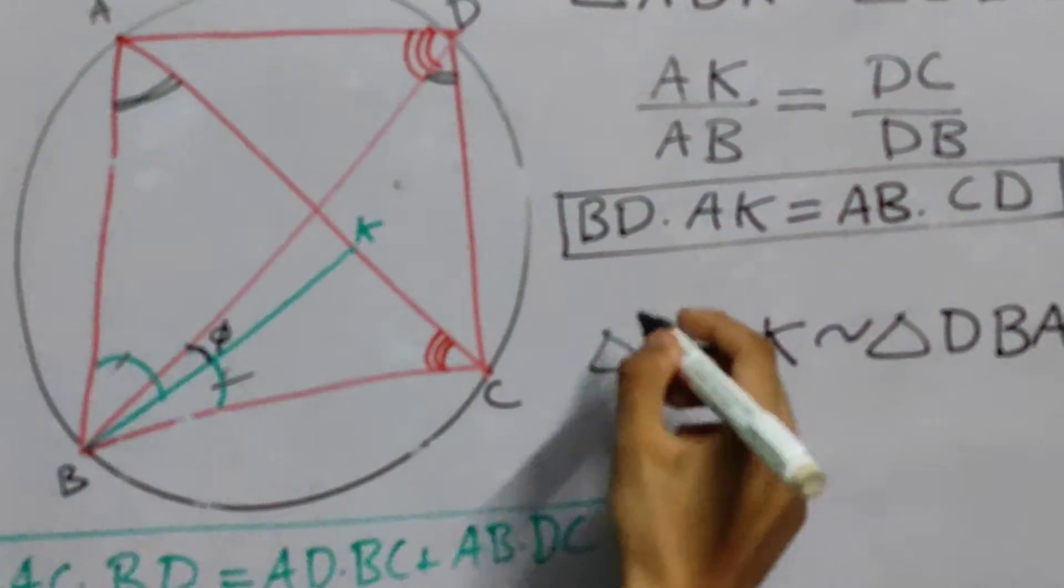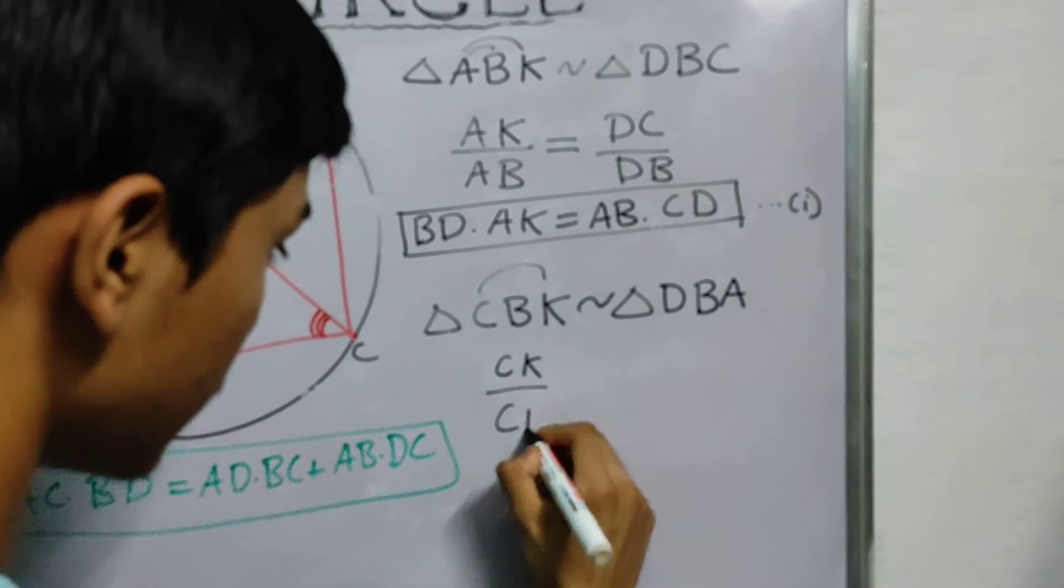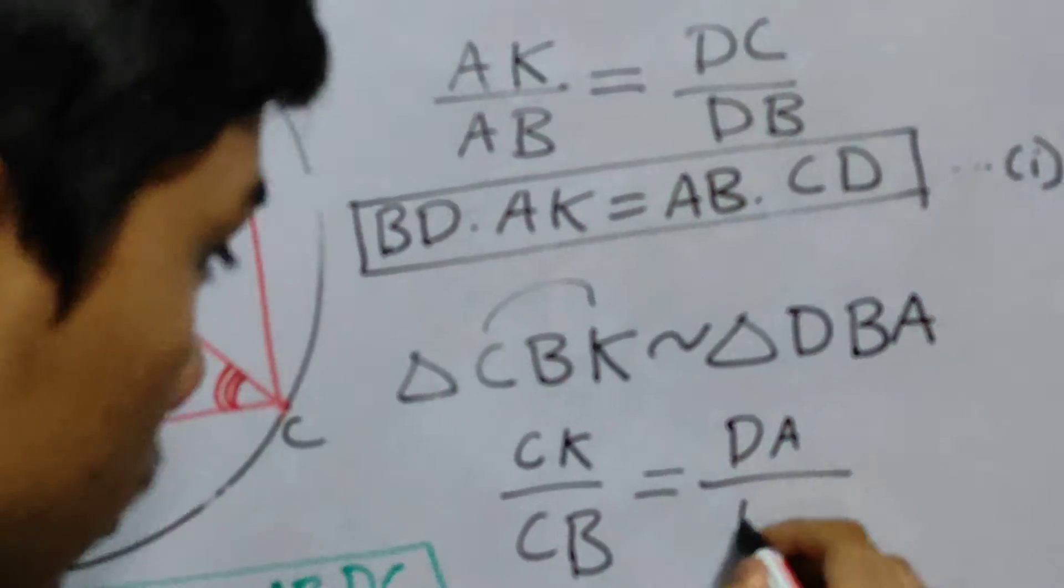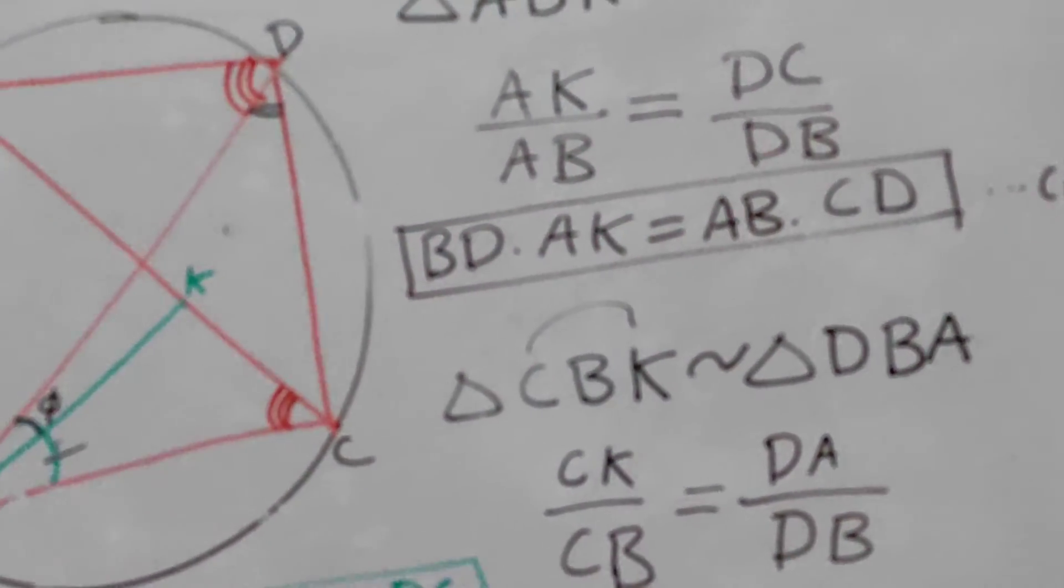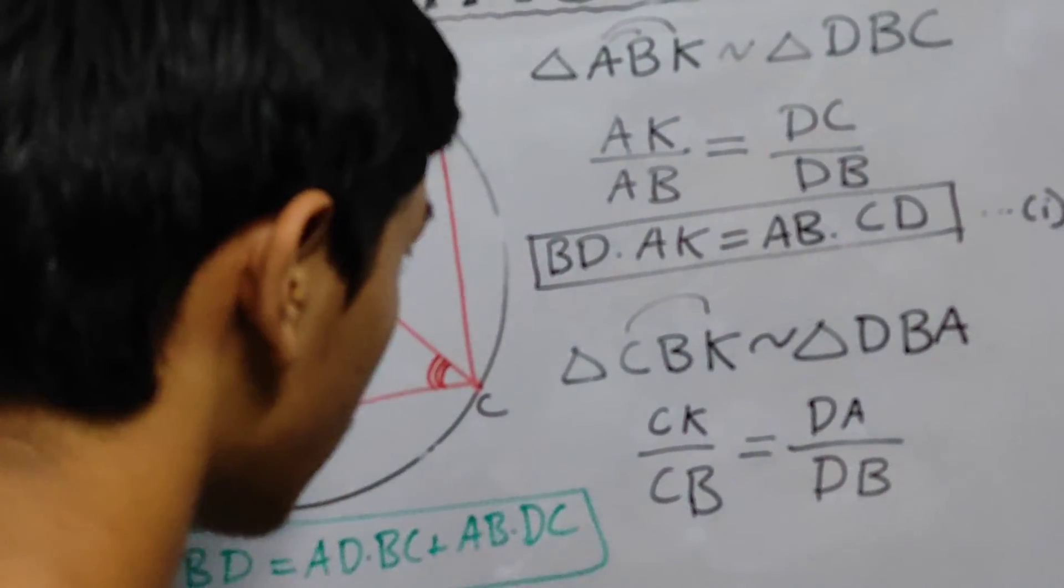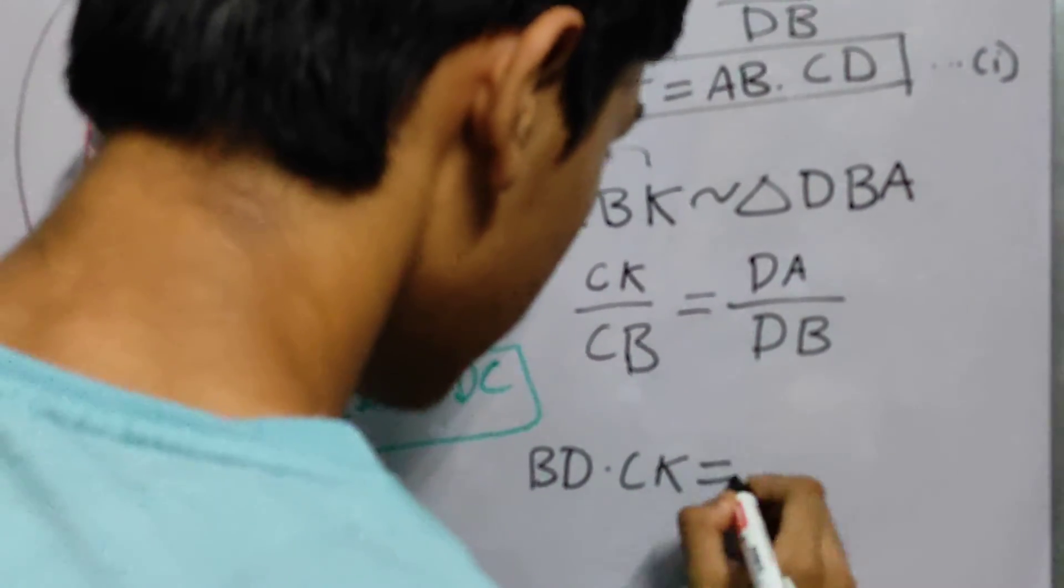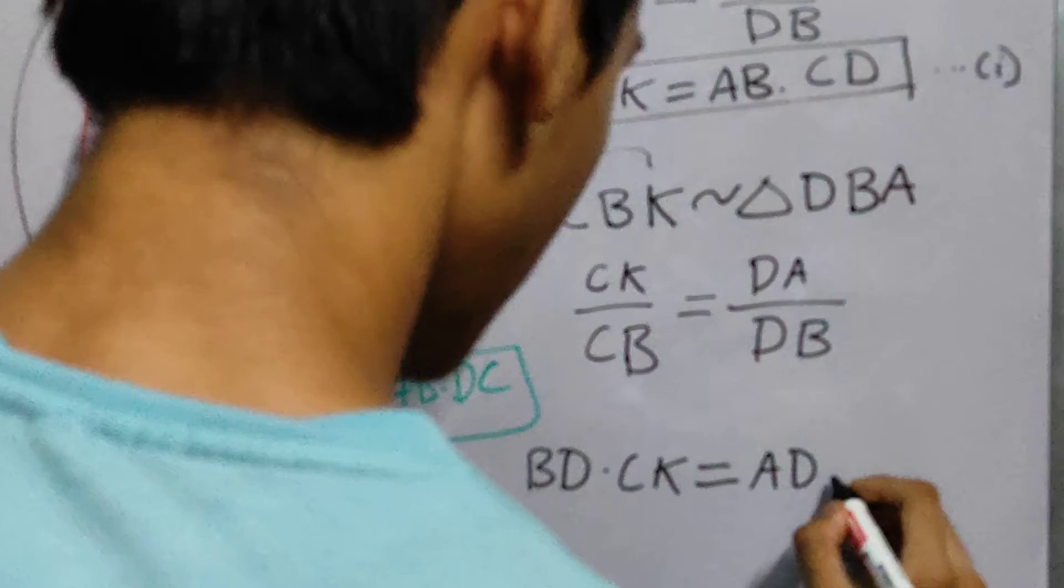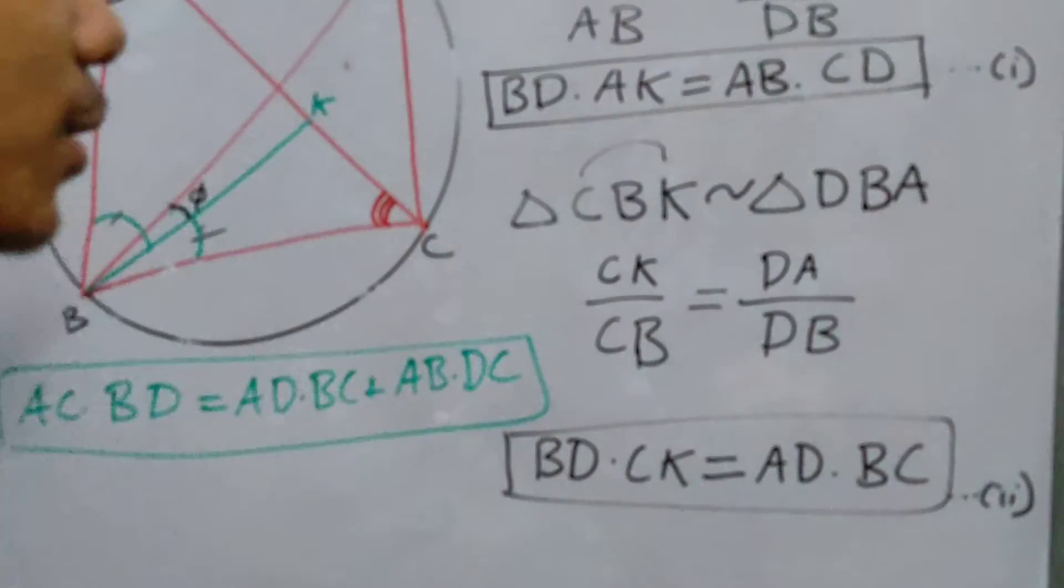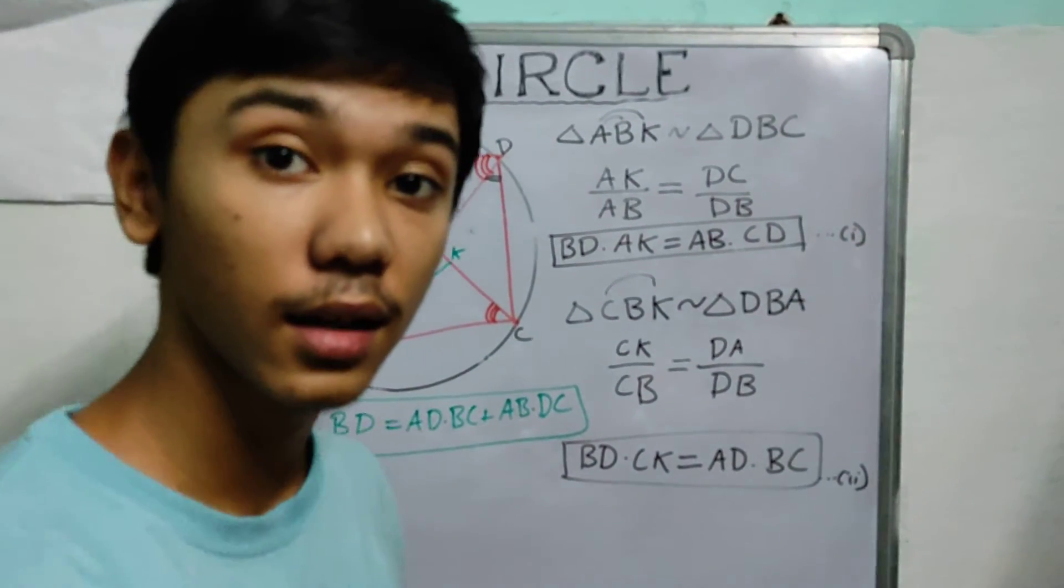Now let us use the denominator ratios. We'll do a similar thing. CK by CB is equal to DA by DB. So you can already see DA or AD being, and BC being produced here. Now we can transpose these denominators and we'll get BD into CK equal to AD into BC. Save this and write it as equation number 2. So you can already see this term being generated, this term being generated in equation 1, and this one being generated in equation 2. And BD is also being generated.